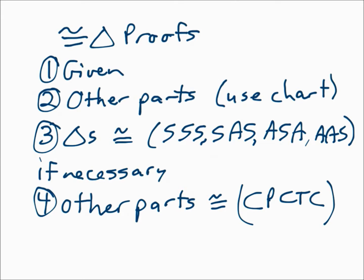So any time you're proving triangles congruent, start with what you're given, then mark the other parts congruent using the chart as a guide. Are there shared sides congruent to themselves? Vertical angles? Alternate interior angles? Get all the remaining parts that give you enough information to say the triangles are congruent. Then say so using SSS, SAS, ASA, or AAS. If they wanted you to prove parts congruent, take it one step further and say those parts are congruent by CPCTC.